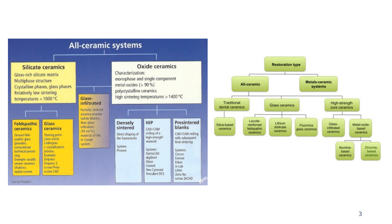All-ceramic restorations can be done either by the traditional analog method or by the CAD-CAM digital method. When talking about metal ceramic systems, or porcelain fused to metal, there are different types of restorations that can be done. The key difference between all-ceramic and metal ceramic is the substructure. All ceramic has a tooth-like shade substructure, while metallic ceramics use a metal framework, and porcelain is applied on both.